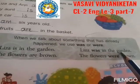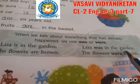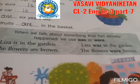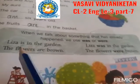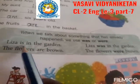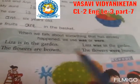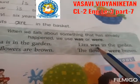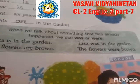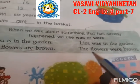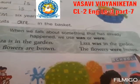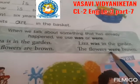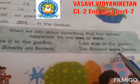See here. 'Lisa was in the garden.' Already happened — Lisa was in the garden. Because it already happened, we use 'was.' 'The flowers were brown.' Flowers are plural, so we use 'were.' W-E-R-E.